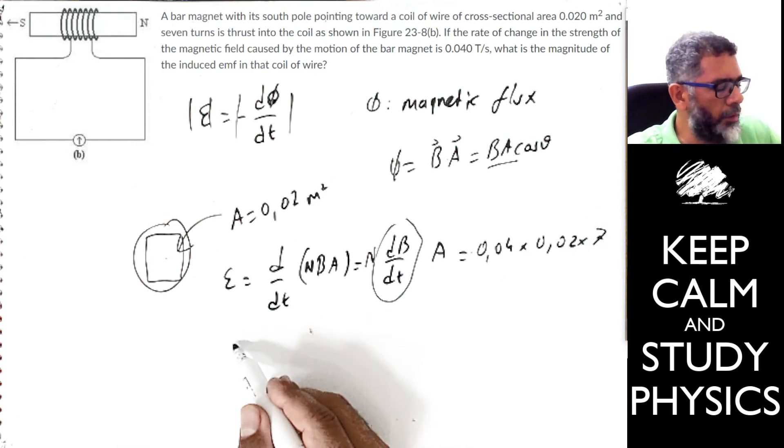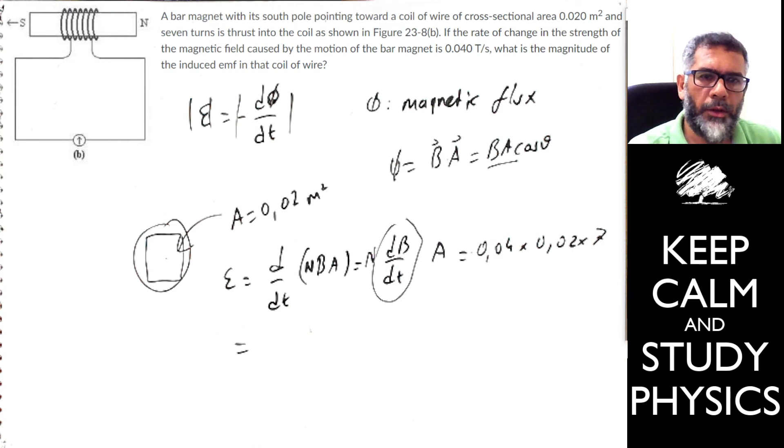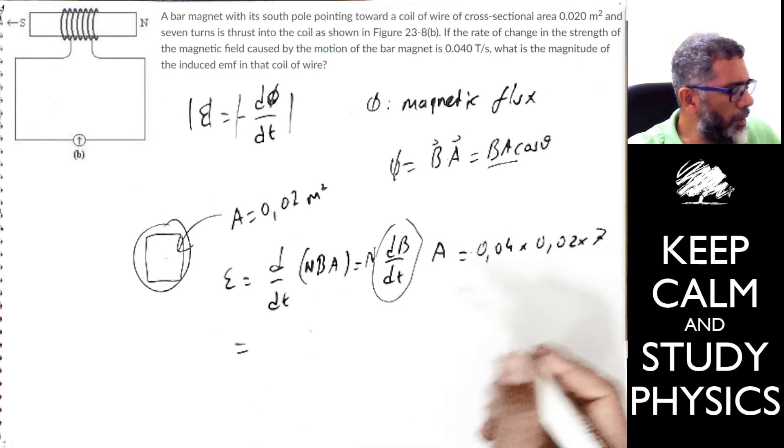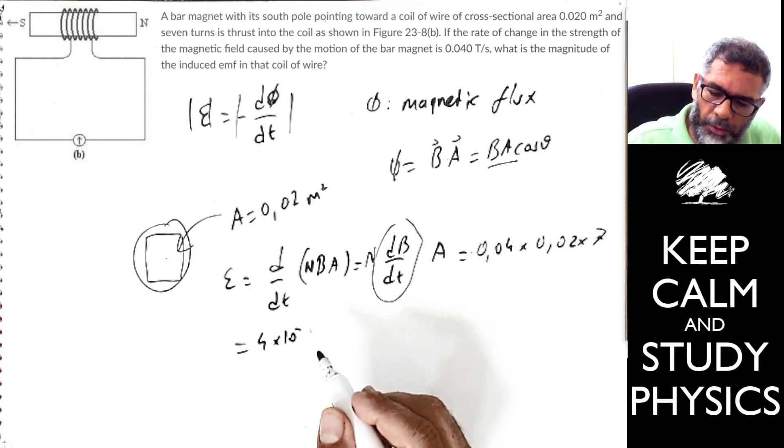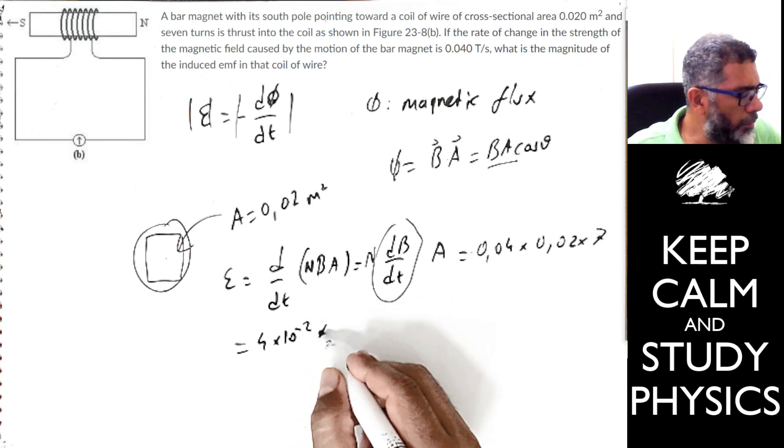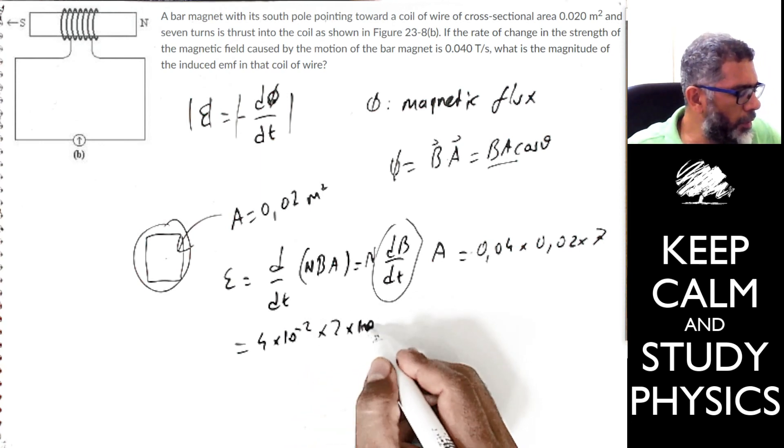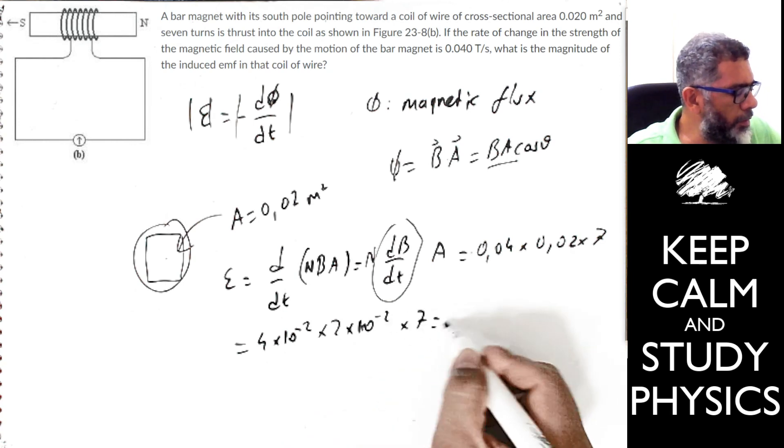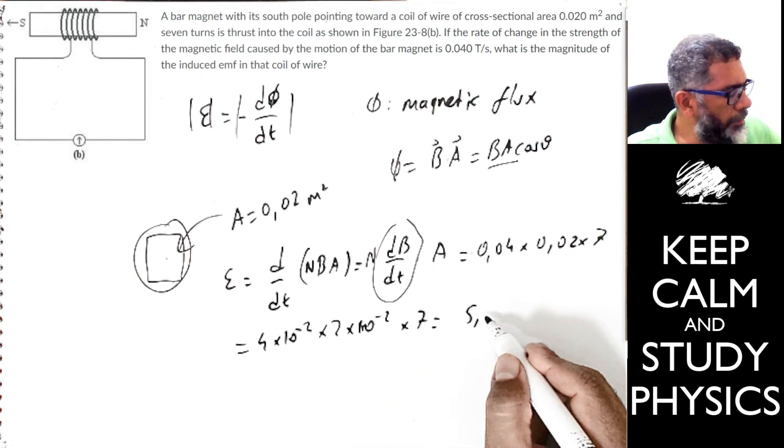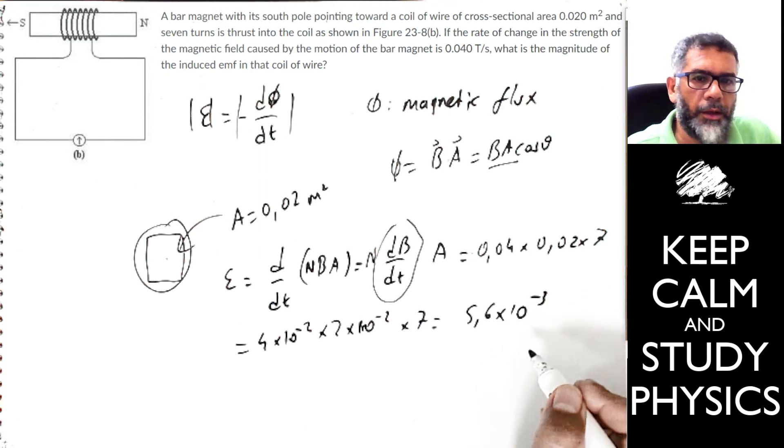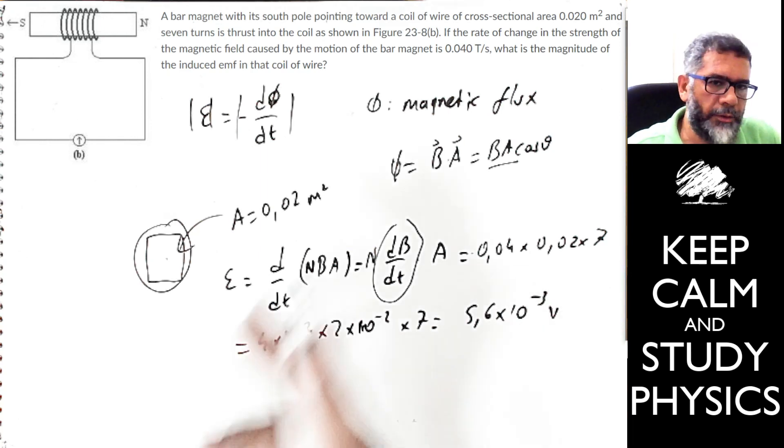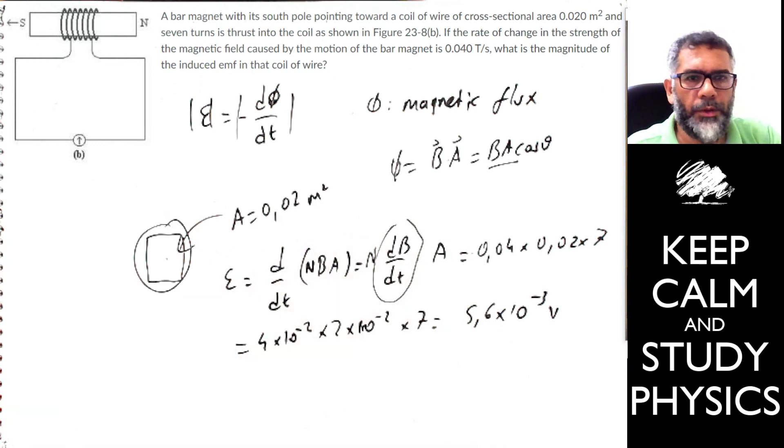wrong result, okay? So if you do this, the 4 times 10 to minus 2 multiplied by 2 times 10 to minus 2 and multiplied by 7 is going to be 5.6 times 10 to minus 3, which is the volt. Of course, the unit for the electromotive force is just volt.